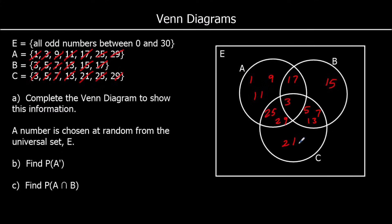Are there any numbers on the outside? Going through all odd numbers between 0 and 30: 19 wasn't in any of the sets, so it goes on the outside. 23 and 27 also weren't in any set, so they go on the outside too. There should be 15 numbers total — counting through confirms we have 15.